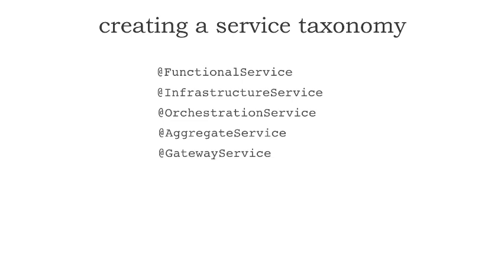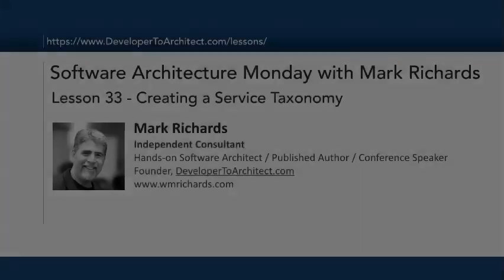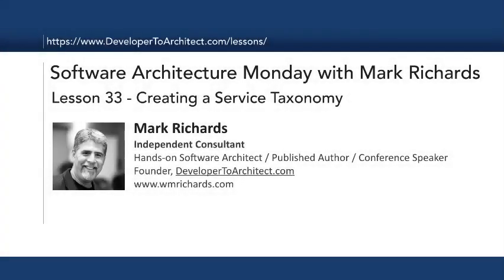The reason this taxonomy is important is because each of these services has either public or private access, may have inter-service communication, or serves a particular role within the microservices ecosystem. This has been lesson 33 — creating a service taxonomy. Use those base five and come up with other taxonomies based on your environment. This has been Software Architecture Monday. Please stay tuned next week for the next architecture lesson at developer2architect.com/lessons. Thank you very much.